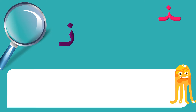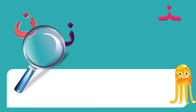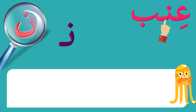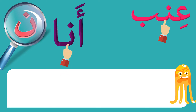حرف النون، تعالوا نشوف كلماته: نون. وحرف النون جي في كلمة عنب: عي-نب. وجي حرف النون في وسط الكلمة. كلمة أنا: أنا، وهنا حرف النون بردو جي في وسط الكلمة: نون.